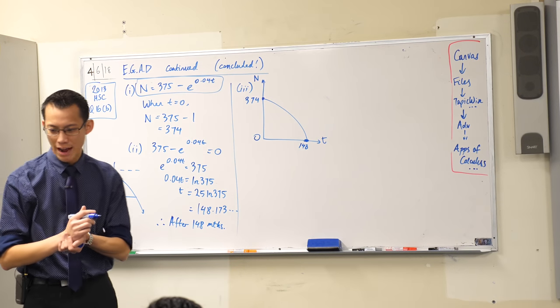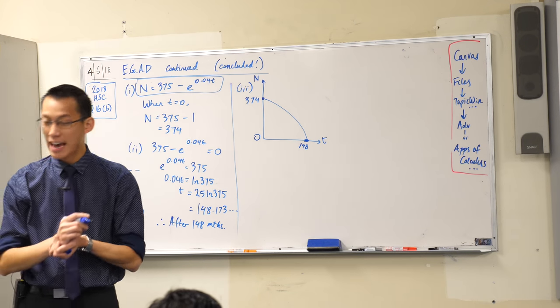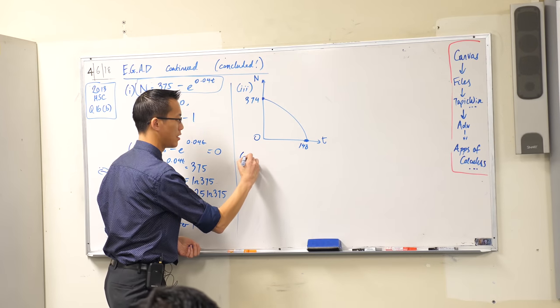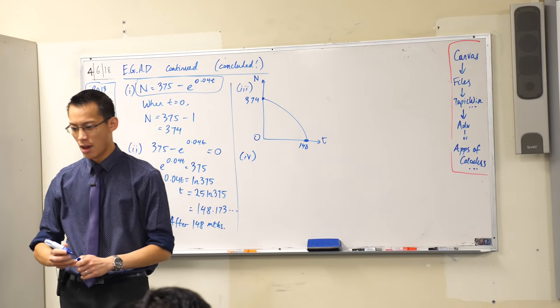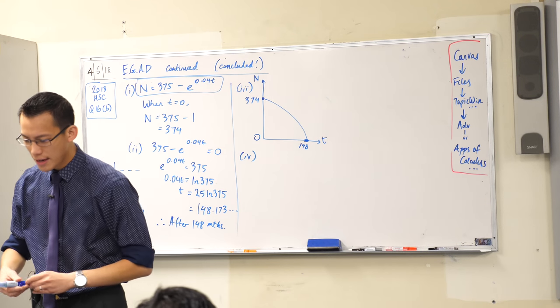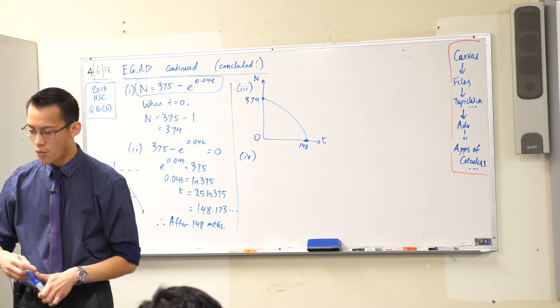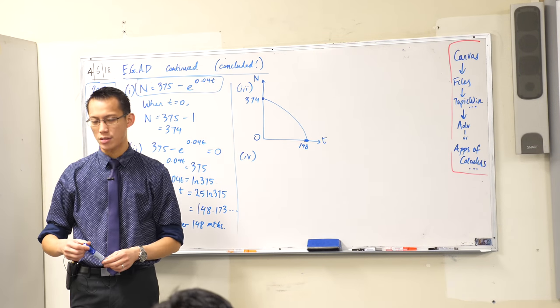There's my trout graph. Part four now actually starts to ask about this other fish that's in here. When is the rate of increase of carp equal to the rate of decrease of trout?